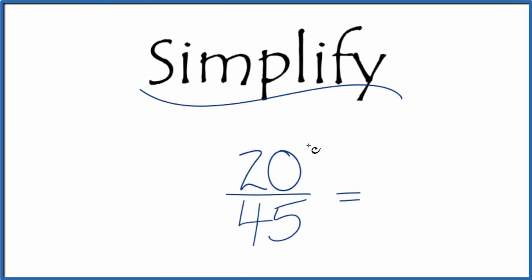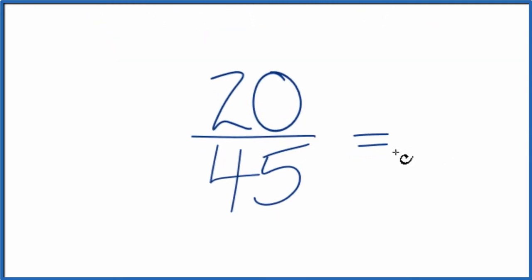If you need to simplify the fraction 20/45, here's how you do it. What we want to do is find another fraction that's equivalent to 20 over 45, has the same value, but reduced to its lowest terms.